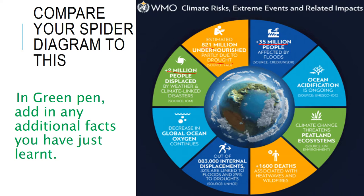2 million people displaced by weather and climate-linked disasters. 'Displaced' means forced out — if you jump into a full bath, the water would be displaced and spill over the side. That's what's happened to some people. You may remember the horrific wildfires that Australia suffered earlier this year, and those people in the path of the wildfire would have had to be displaced — forced away by the disaster.